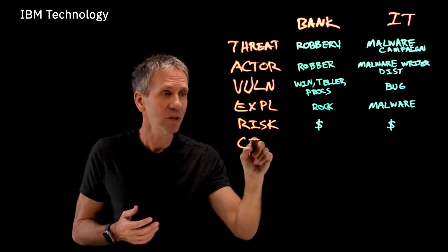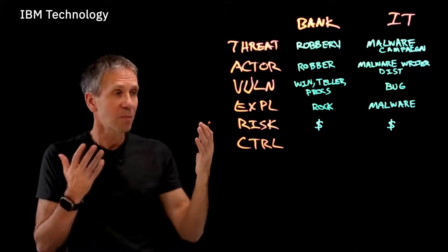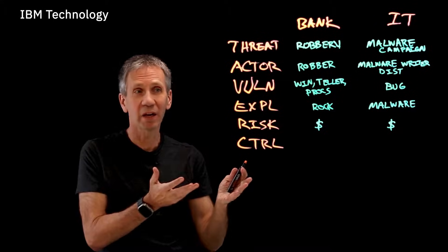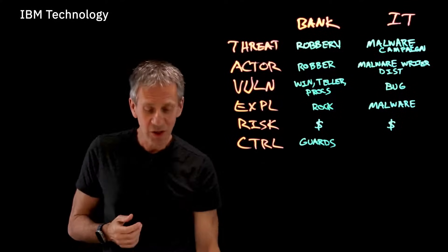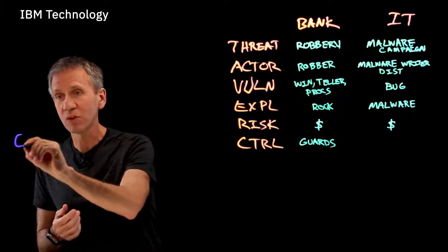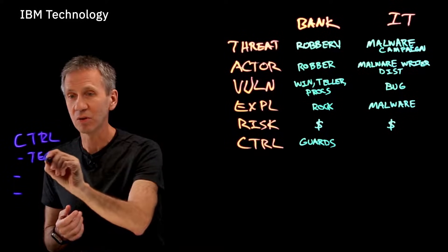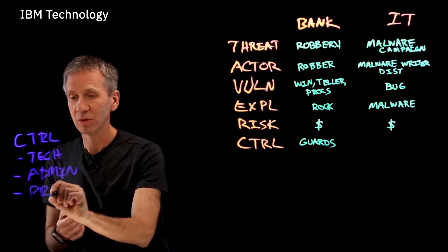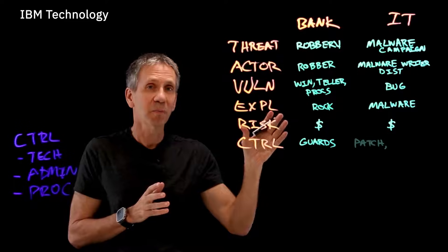Ultimately we look at controls, sometimes called countermeasures. In a bank we put in alarms, cameras, and guards. In an IT system we have different kinds of controls, and they fall into three types: a technical control, an administrative control, and a procedural control.